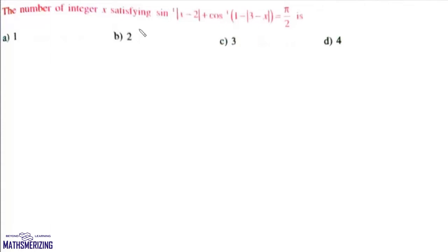The question asks for the number of integers x satisfying the equation: sine inverse of |x-2| plus cosine inverse of (1-|3-x|) equals π/2.